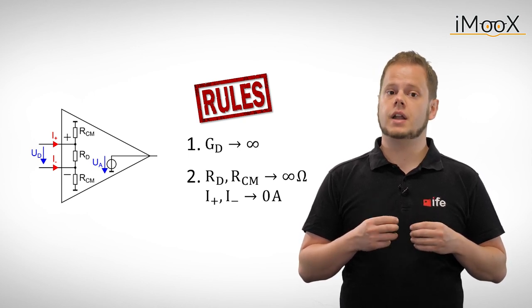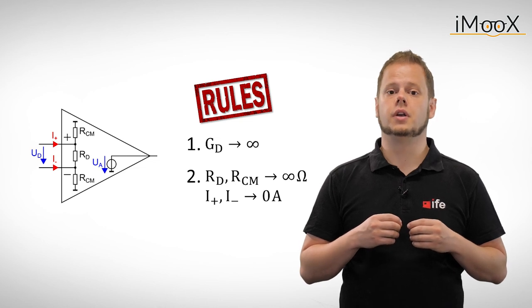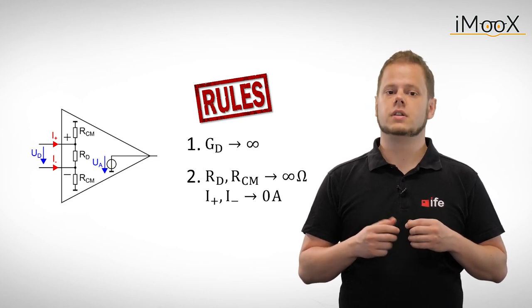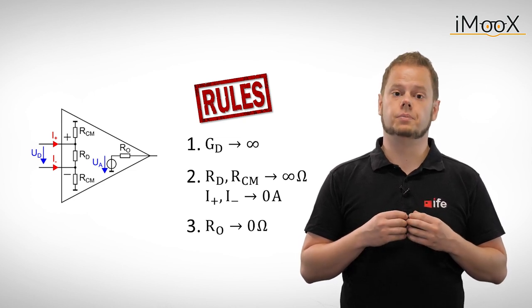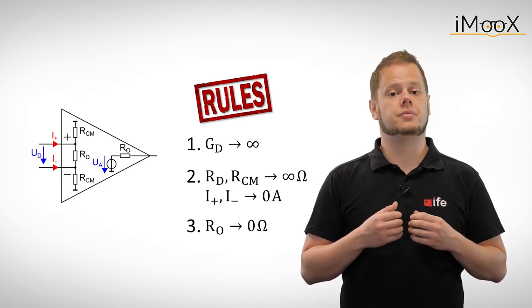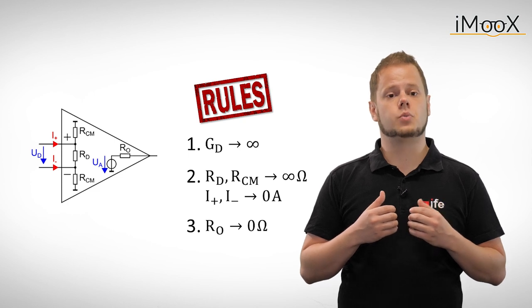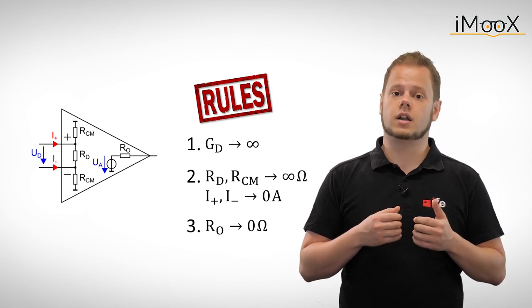These are very high and in turn no currents are flowing into the inputs. The third rule states that the output impedance is very low. Thus the operational amplifier delivers the output voltage we want it to deliver regardless of the load.